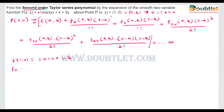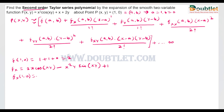Now we find the partial derivative of the function with respect to x. It becomes 2x·cos(xy), and by the product rule we also get a term −x²y·sin(xy) + 1. To find the value at (1, 0), we put x = 1, y = 0, giving 2 − 0 + 1 = 3. So fx(1, 0) = 3.